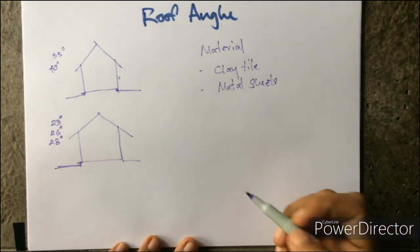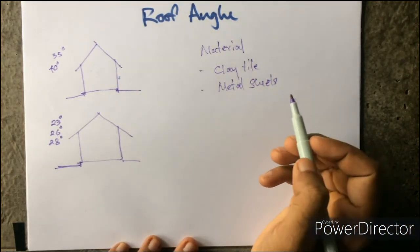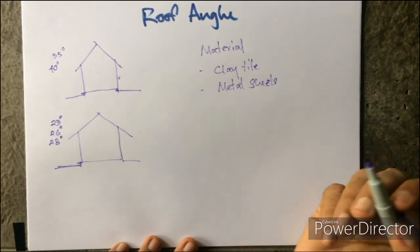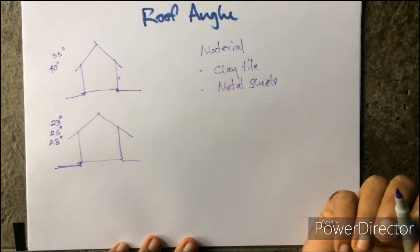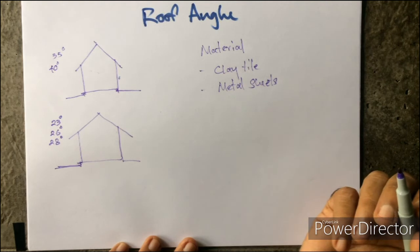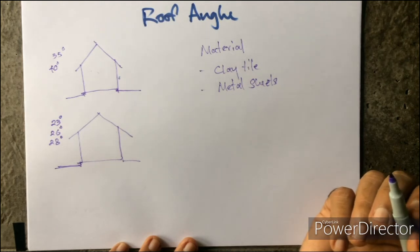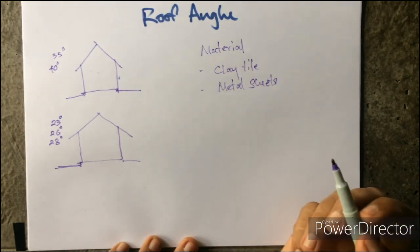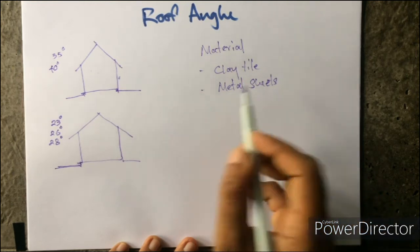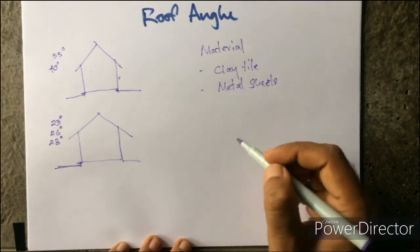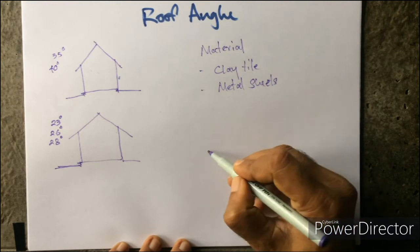For roofing material, we have clay tiles and metal sheets mainly. You have different other materials in the market today—asbestos, different plastic materials, rubber mixed materials, and other sorts of materials.